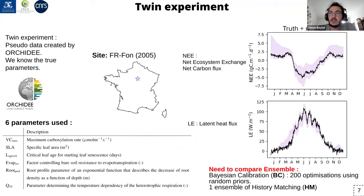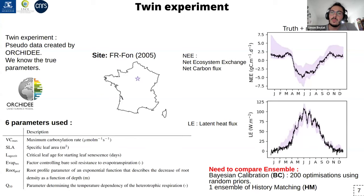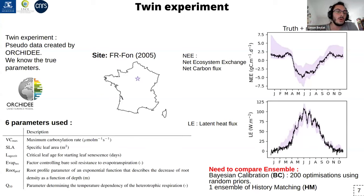We wanted to compare these methods, so we worked on the ORCHIDE model and performed a twin experiment. We selected six parameters we know well and took their default values to run a simulation on the Fontainebleau site in France for the year 2005, looking at the net carbon flux and the latent heat flux. We added a small noise to the simulation and used this noisy simulation as fake observations, and we wanted to see whether Bayesian calibration or history matching are able to recover the same simulation and the same parameters used to generate the fake observations.